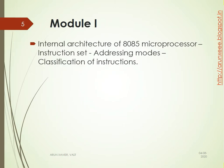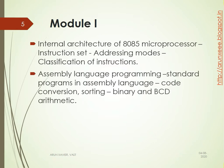Now we can go to Module 1. In Module 1 we are going to discuss about the internal architecture, instruction sets, and addressing modes of the 8085 microprocessor. Then the classification of instructions — that means arithmetic instructions, logical instructions, mathematical instructions, etc. Then assembly language programming: how we can write a simple assembly language program, code conversion programs, sorting, binary and BCD arithmetic, etc.